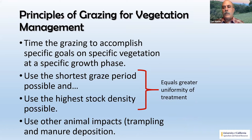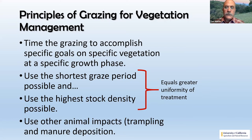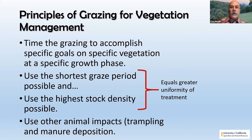With high stock density and short graze periods, animals are more likely to eat less palatable plants — similar to a potluck dinner where, if the room is full, you'll try a little of everything rather than just what you like. This uniformity of treatment is one of the key benefits of high-density, short-duration grazing.